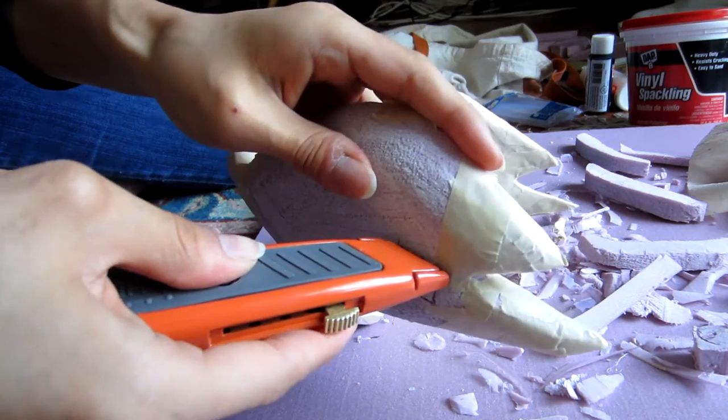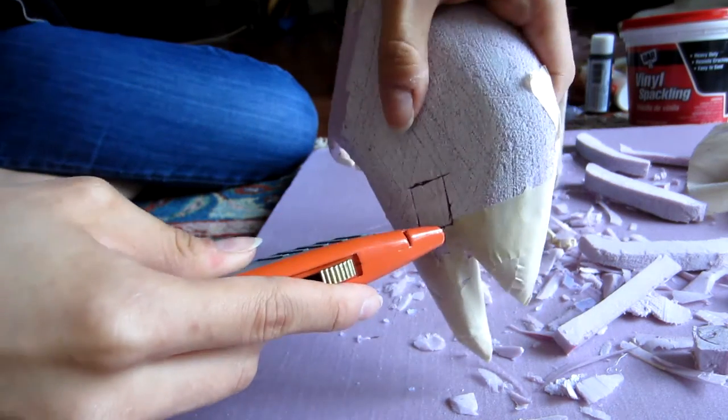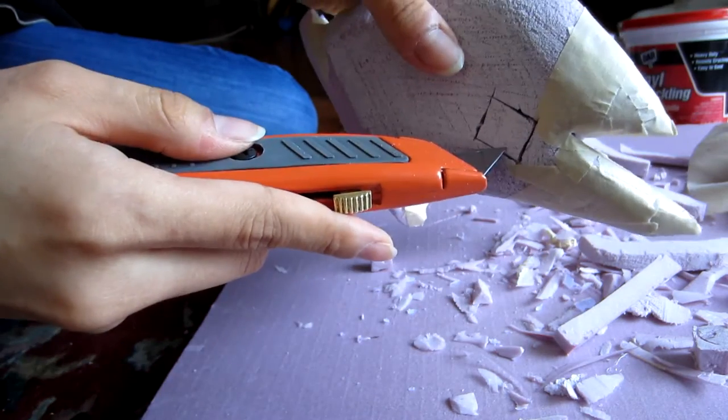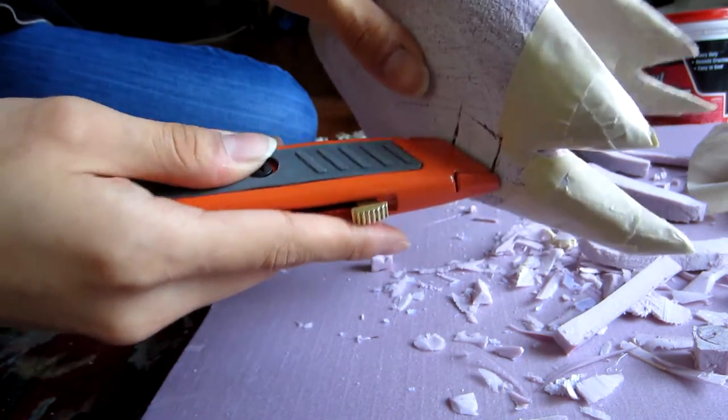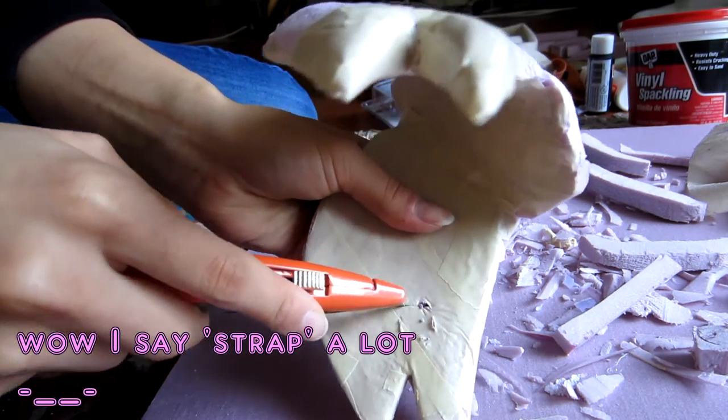You can stab the exacto knife through and it'll be perfectly fine. It won't hurt the mask at all. It is sturdy enough to hold this. And you can make a small diamond shaped hole that will eventually hold the elastic strap that will strap this to your head.